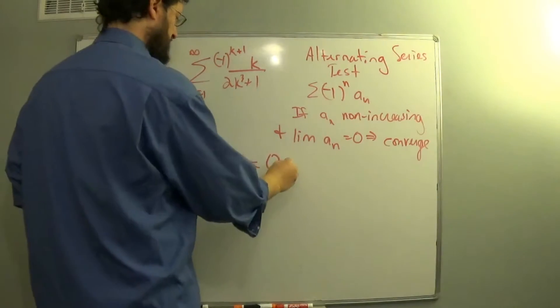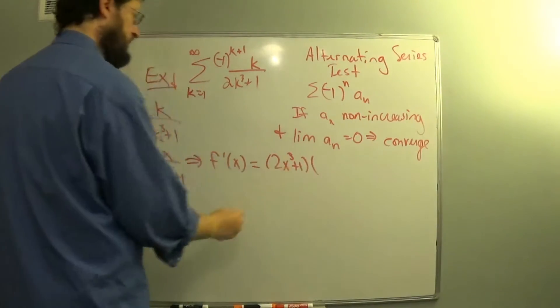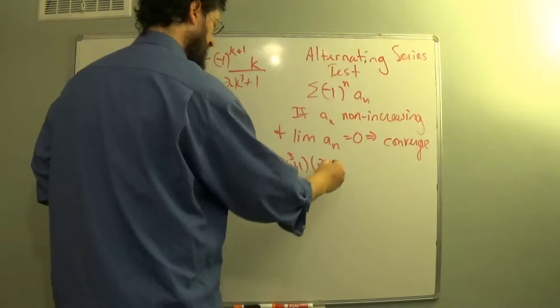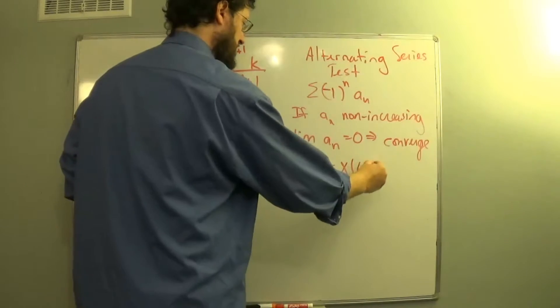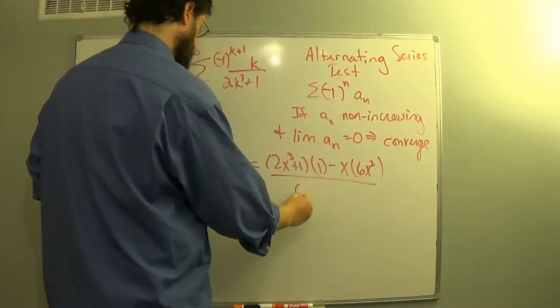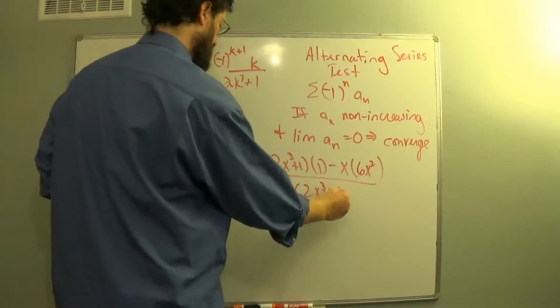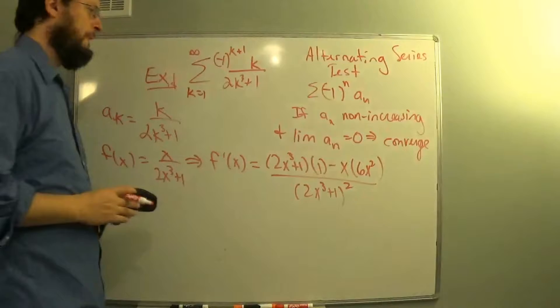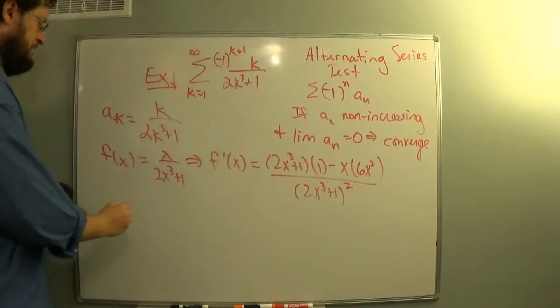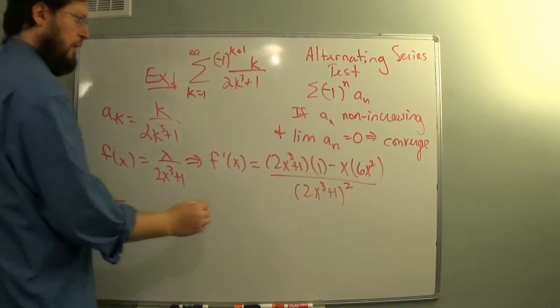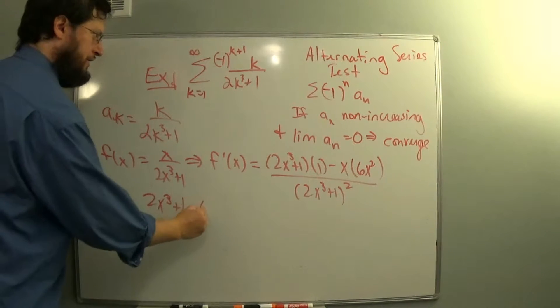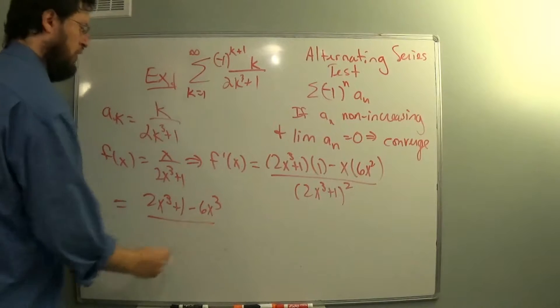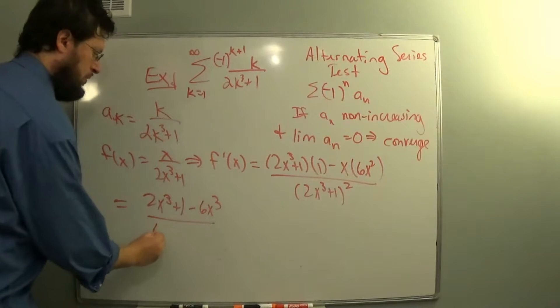That's the bottom times the derivative of the top, minus the top times the derivative of the bottom, all over the bottom squared. That is 2x cubed plus 1 minus 6x cubed, all over a positive number.